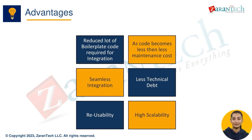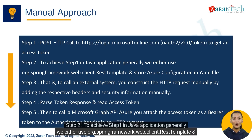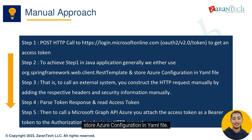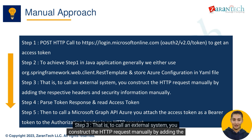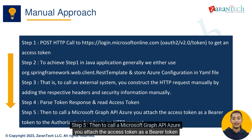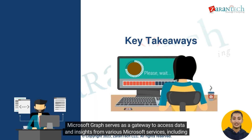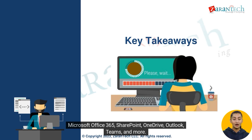Manual approach: Step 1 — post an HTTP call to https://login.microsoftonline.com/oauth2/v2.0/token to get an access token. Step 2 — in a Java application, generally use org.springframework.web.client.RestTemplate and store Azure configuration in a YAML file. Step 3 — to call an external system, construct the HTTP request manually by adding the respective headers and security information. Step 4 — parse the token response and read the access token. Step 5 — attach the access token as a bearer token to the authorization header in an HTTP request to call a Microsoft Graph API.